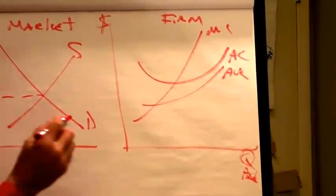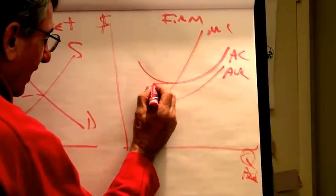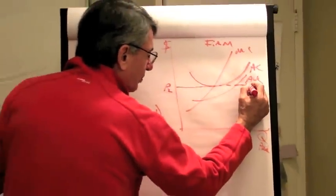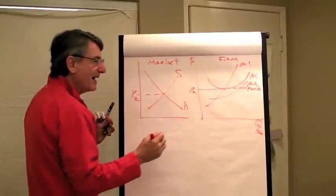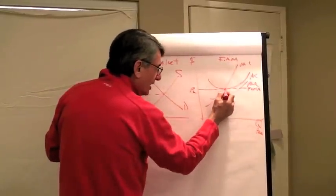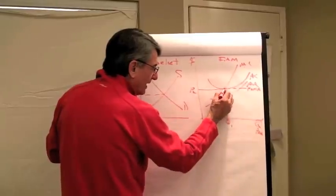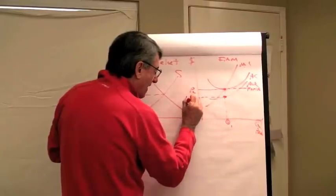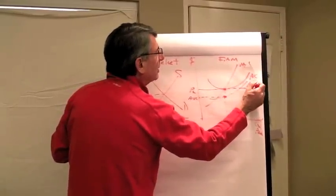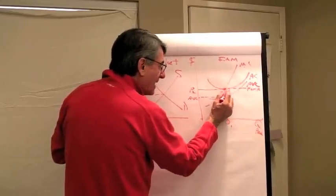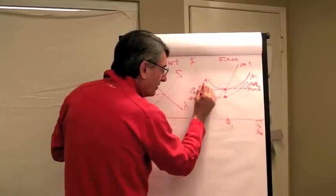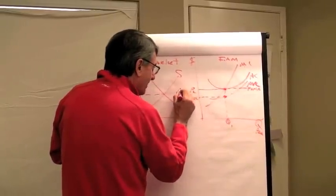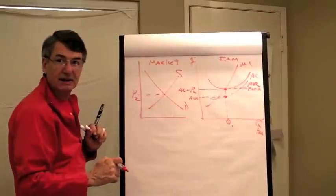What if the price in this market is right there — P2? This is price and also marginal revenue to the price taker, and so they would produce exactly where marginal cost equals marginal revenue — that quantity. As they go back up, there is the average variable cost from the average variable cost curve, and then this point is shared by marginal cost, marginal revenue, and average cost. So the average cost is exactly equal to the price in this case.